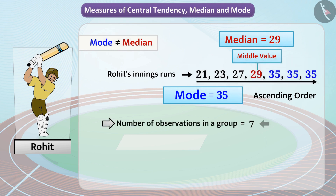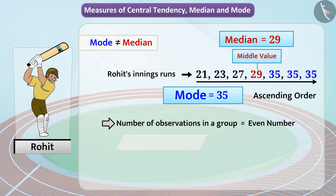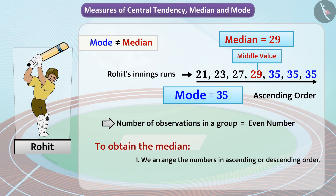The number of observations in these groups is an odd number, so the median can be found by identifying the middle number when observations are arranged in ascending or descending order. Can you think of how the median will be deduced if the number of observations is even? In cases where the number of observations is even, we arrange the numbers in order and derive the mean of the middle two numbers.